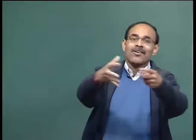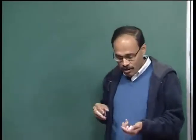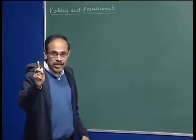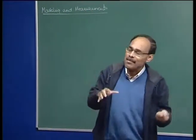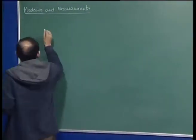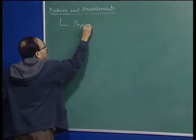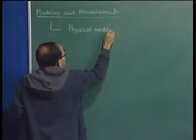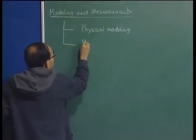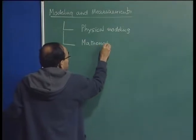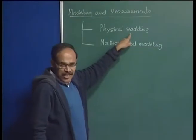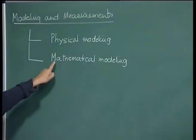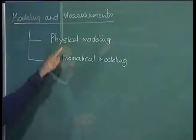Models basically means representing a process. We can represent a process either by a mathematical equation or expression, or by a physical setup itself by changing the scale, dimension, fluid, and so on. So we can have physical modeling and we can have mathematical modeling. We can represent the process in a smaller scale physically, or represent it in terms of mathematical equations or expressions. I will discuss both one by one.